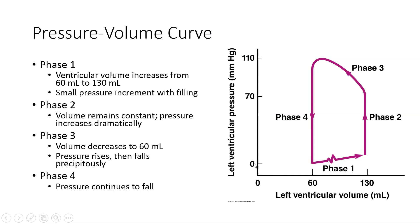The pressure-volume curve is an important tool for correlating the pressure and the volume in the left ventricle specifically. We focus on the left ventricle because it tells a more important story as it relates to systemic circulation. We plot ventricular pressure on the y-axis and ventricular volume on the x-axis, and correlating those two variables produces the pressure-volume loop. The first curve shows us what happens in phase one.